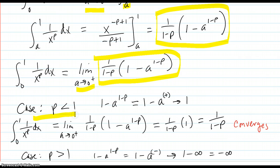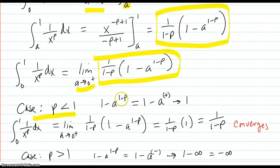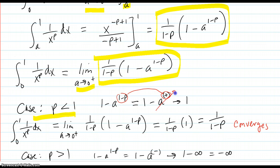Case 1: p less than 1. For p less than 1, the exponent 1 minus p is going to be a positive number. That means we have a raised to some positive power, and a is going down to 0, so there's no trouble — that term goes to 0. So 1 minus 0 is 1, and that expression converges to 1.